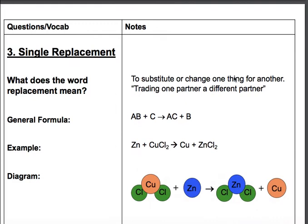The next type of reaction we're going to talk about is single replacement. So the word replacement means to substitute or change one thing for another. So if you think about it, it's kind of like trading one partner for another. If you're doing an assignment, and you realize that your one partner you're working with isn't doing a very good job, you can trade them for a different partner and leave that other person behind.